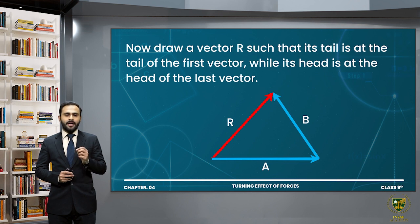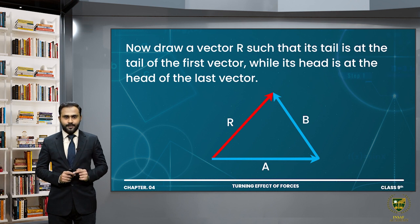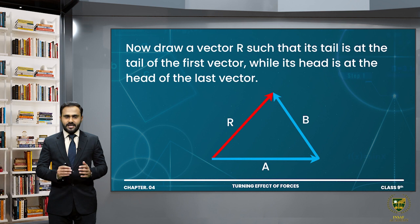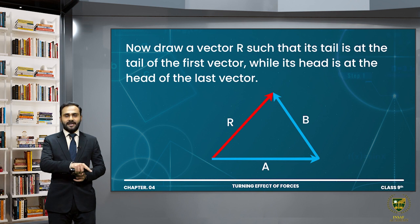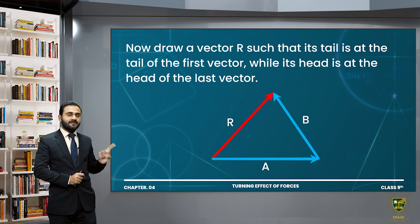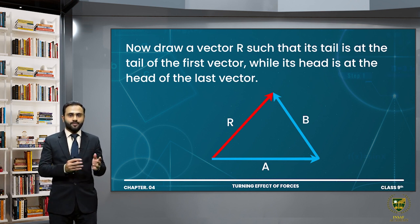We represent each vector with an arrow — the length of the arrow shows its magnitude and the arrow head shows its direction. When you have a number of forces, first represent them with arrows, then join these arrows head to tail. Once all arrows are joined head to tail, draw the resultant vector — its tail coincides with the tail of the first vector, and its head coincides with the head of the last vector. That line is called the resultant vector.